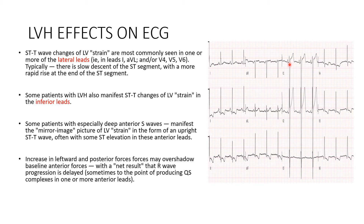Considering these parameters, when we see ST changes in the lateral leads or the inferior leads — as in this case — they are more suggestive of LV strain. LV strain refers to changes in the ST-T segment, more commonly ST depressions or T wave inversions which are asymmetrical, seen in lateral as well as inferior leads. This is what we call LV strain.